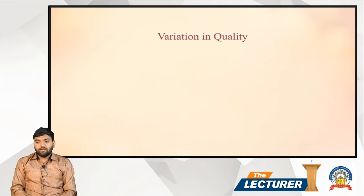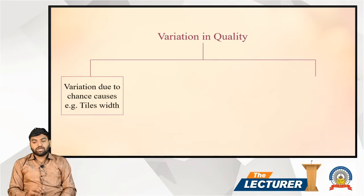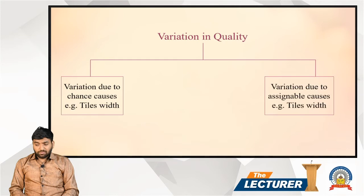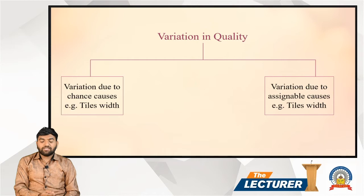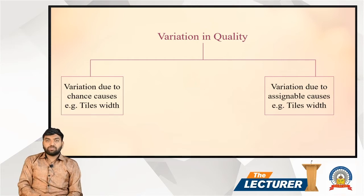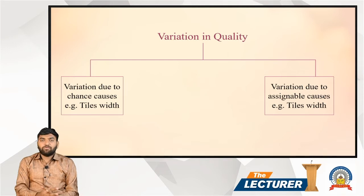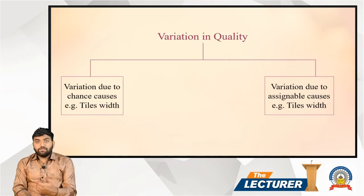There is variation in quality, and this variation may be of two types. The first is variation due to chance causes, and the second is variation due to assignable causes. For example, if tiles are being manufactured with a target width of 10mm, small deviations occur — say 10mm, 10.2mm — and this width variation is not strictly maintained.